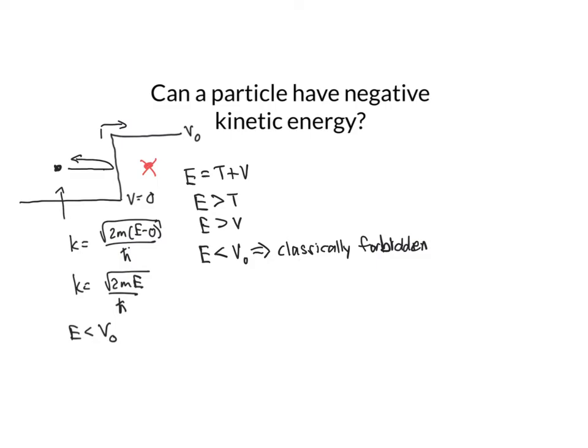But let's think about our solutions for the quantum mechanical case. In the quantum mechanical case, we have that our wave function is equal to c₁e^(-ikx) + c₂e^(ikx). And so if k is equal to square root of 2m(E - V₀) over ℏ,